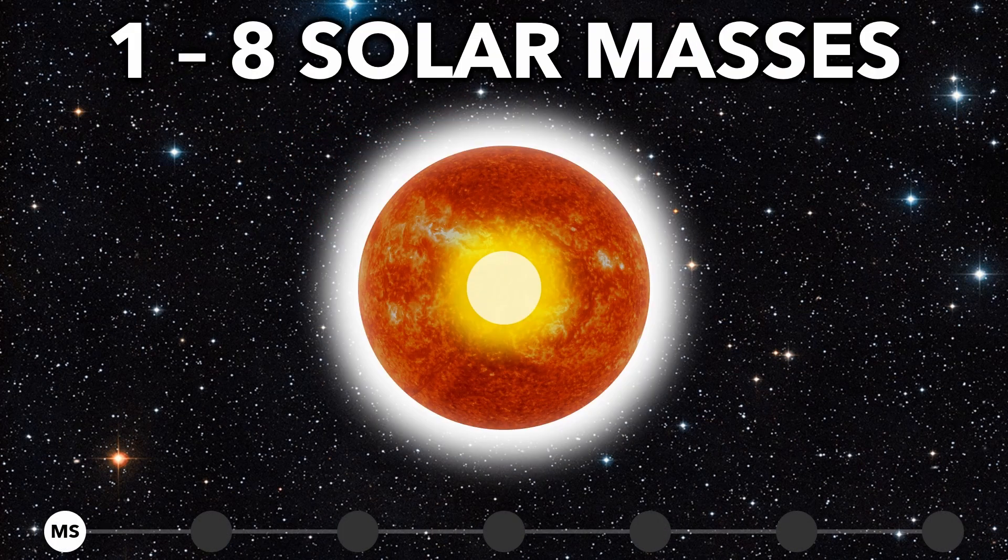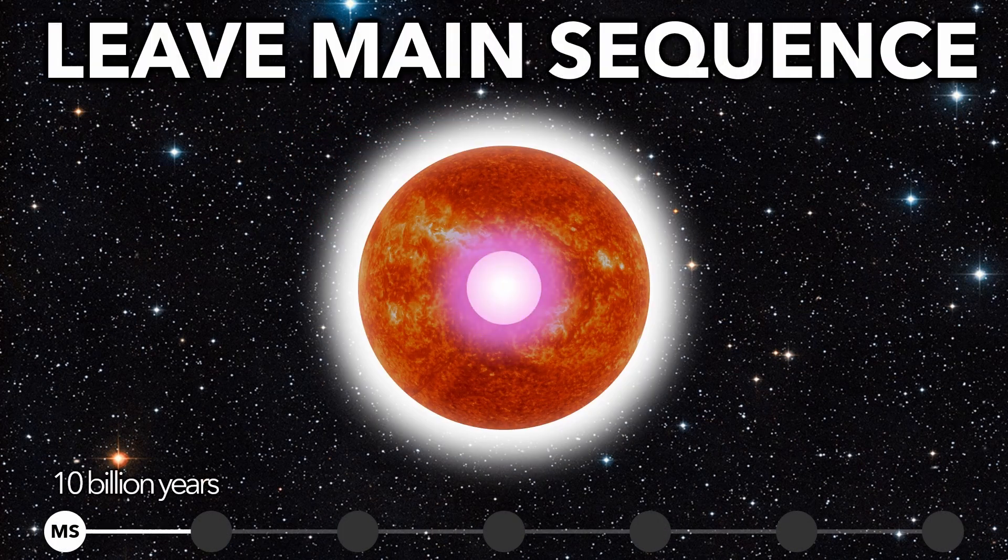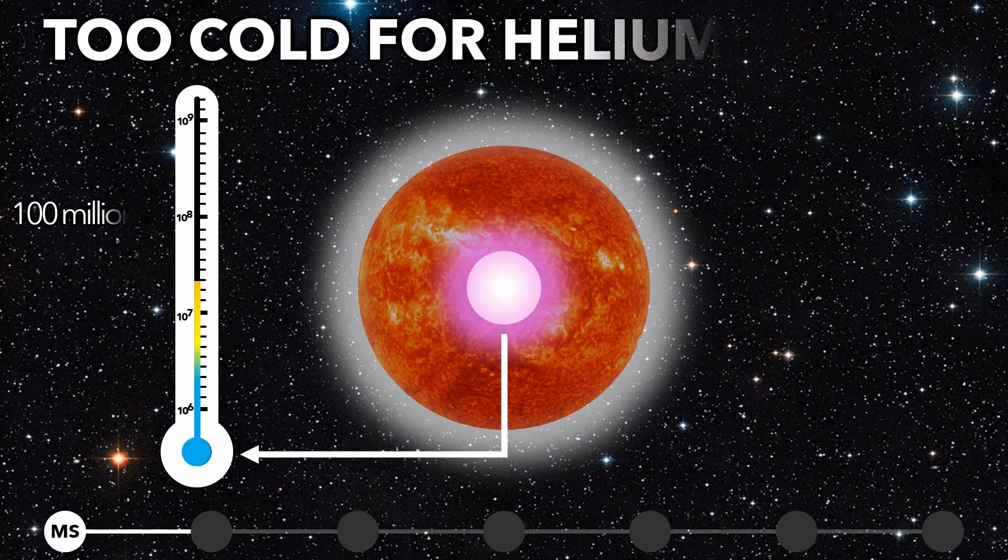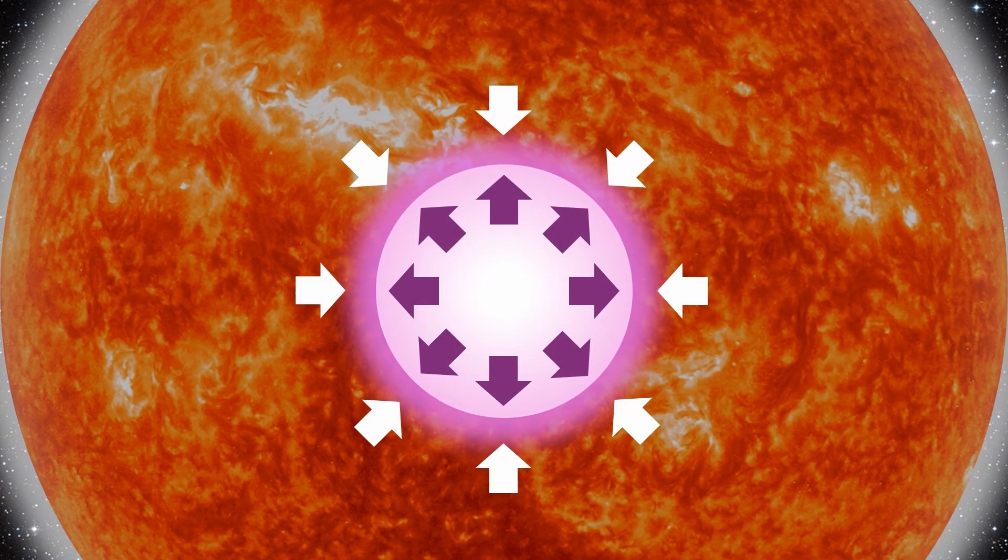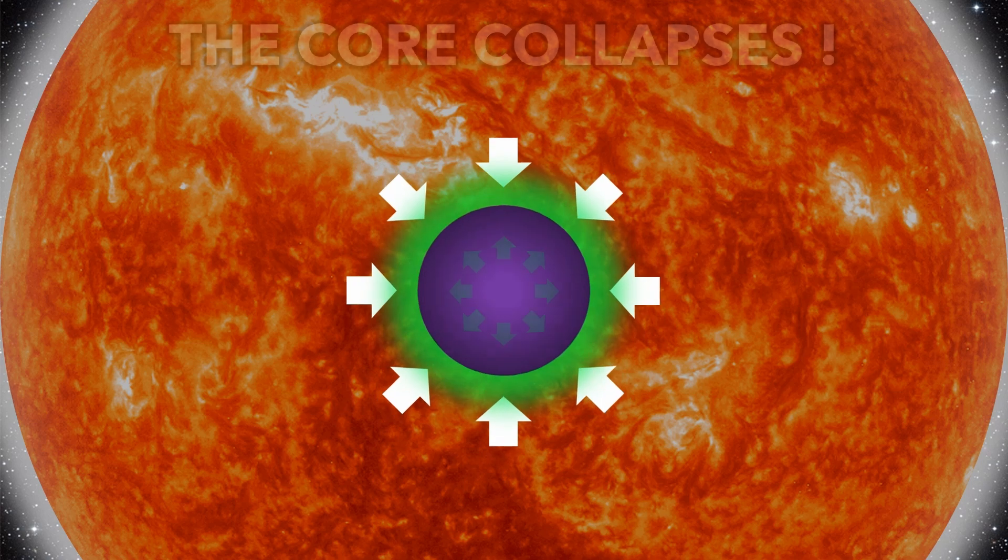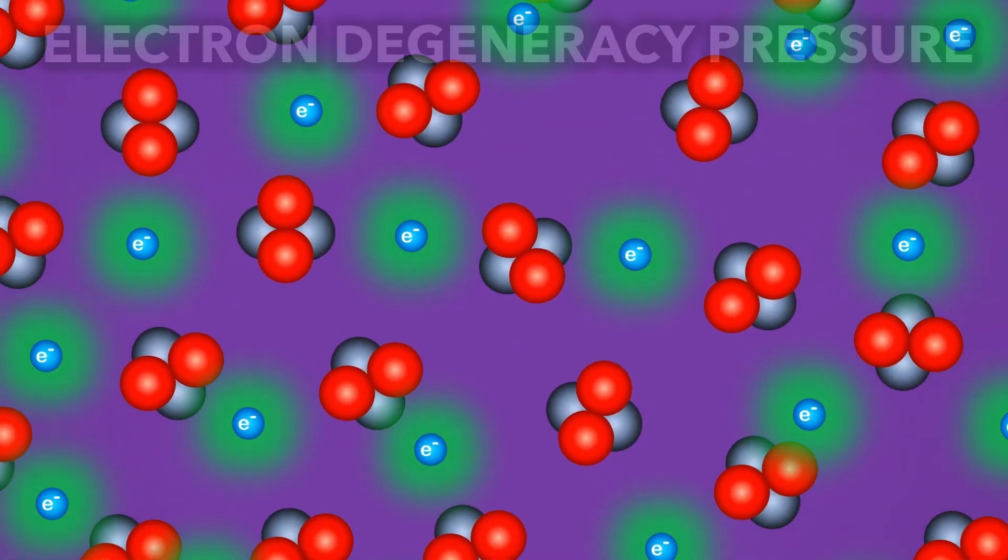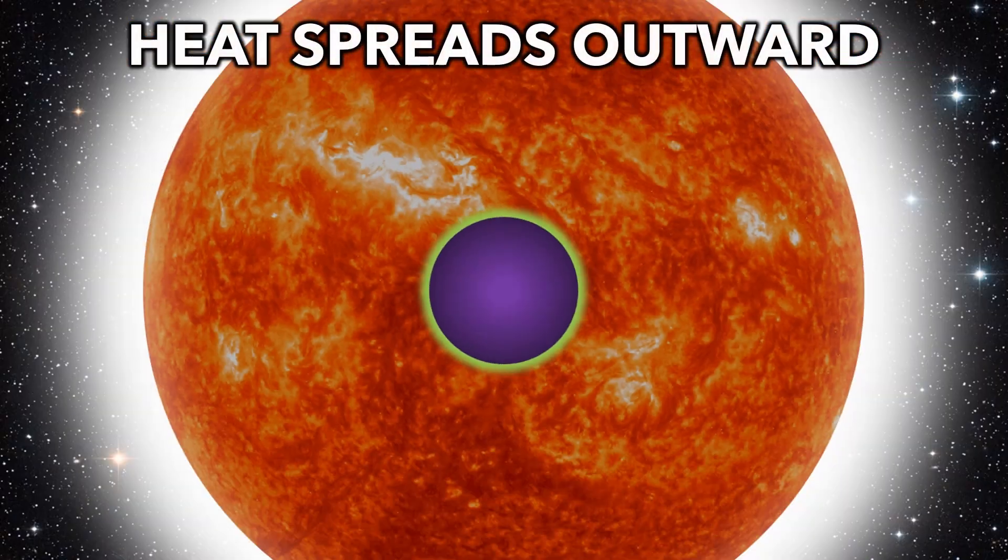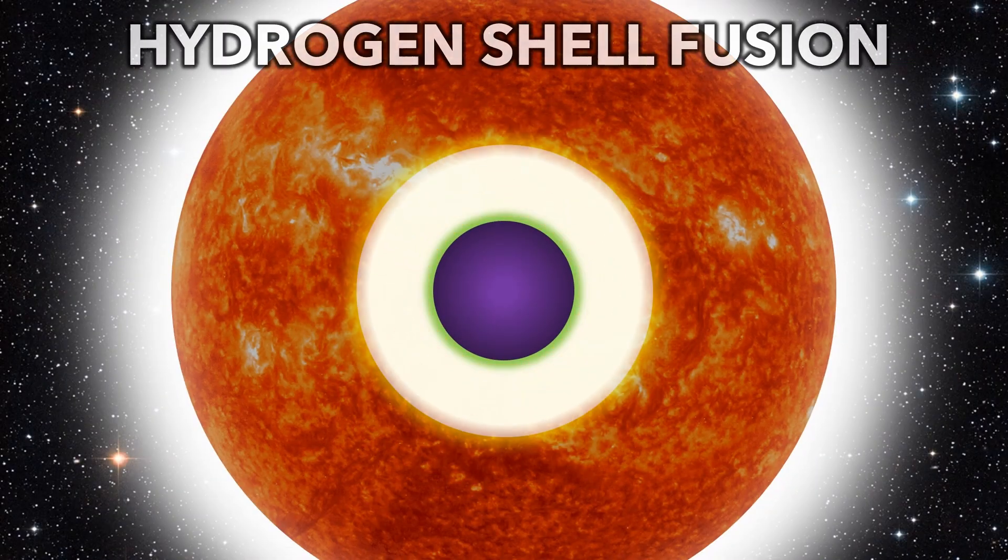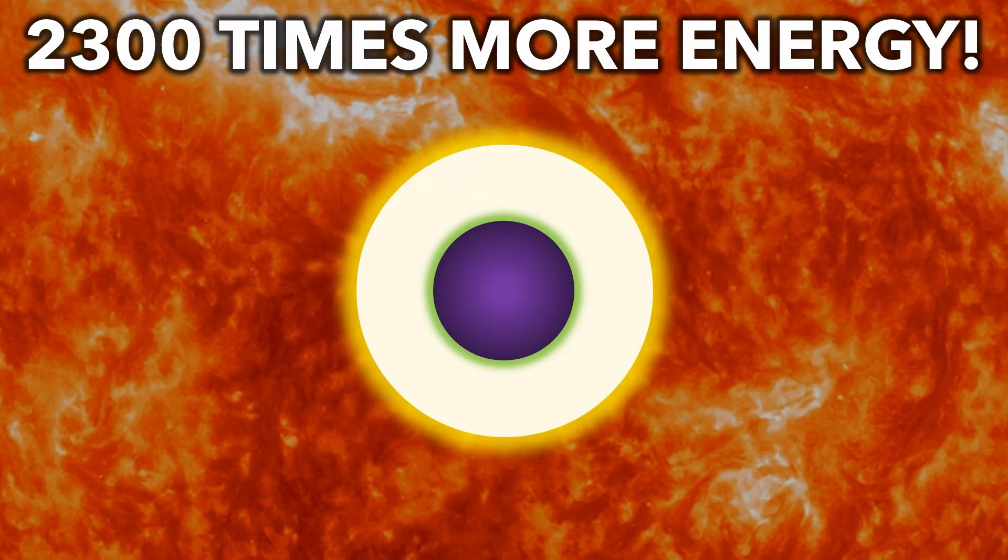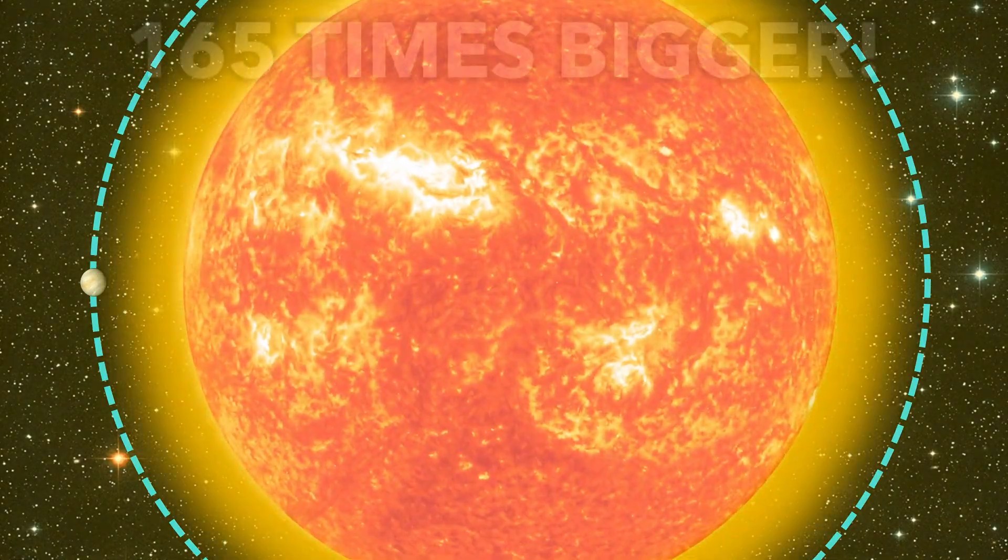Low mass stars like the sun run out of hydrogen after 10 billion years. The core is too cold to fuse helium. Without outward pressure from fusion, the core collapses under gravity. Quantum forces between tightly packed electrons stop the collapse, but the heat triggers fusion in a shell of hydrogen. Energy production soars, making the upper layers expand to giant proportions.